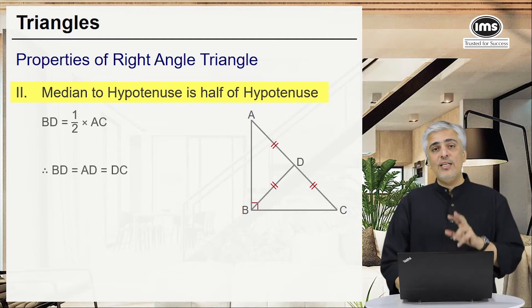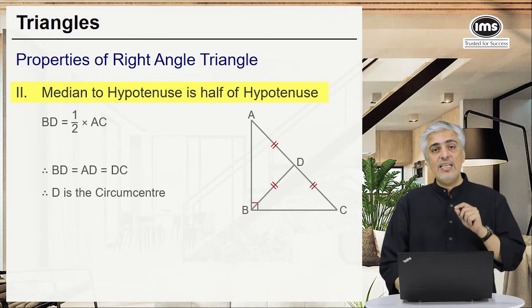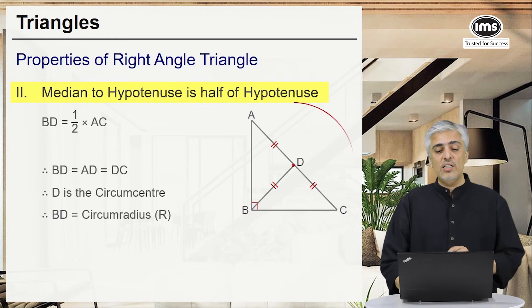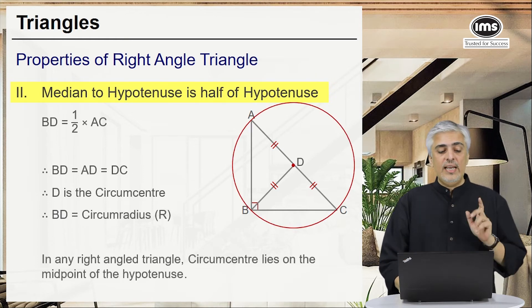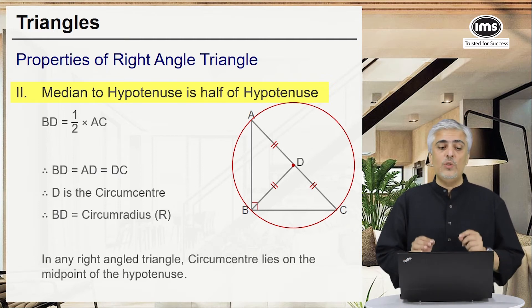So you can clearly see BD, AD and CD all three become equal, which will make D as your circumcenter because D is a point from which AC and B are equidistant. So taking D as a center and BD, AD or CD as your radius, if I draw a circle that will become your circumcircle. And what do we know in any right angle triangle, the circumcenter will always be the midpoint of the hypotenuse.